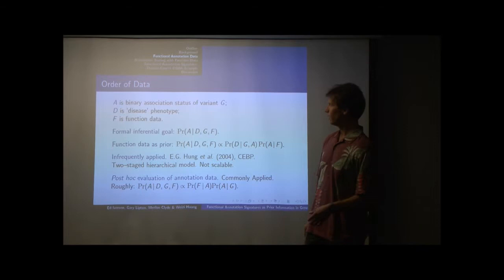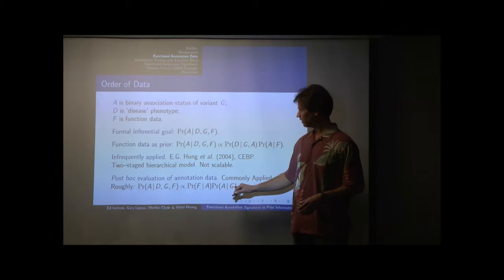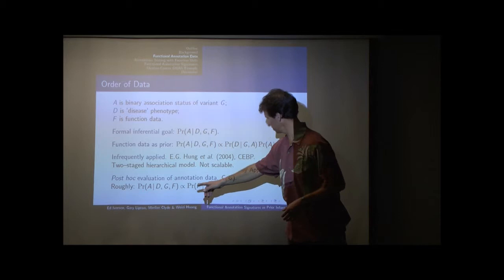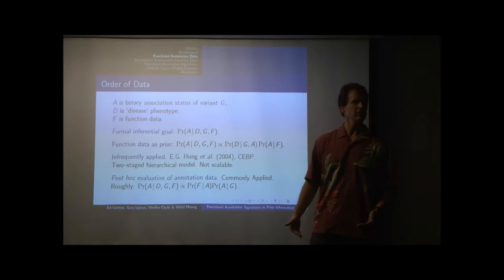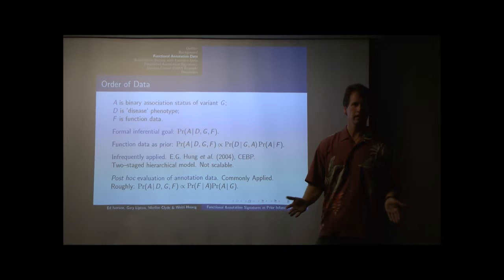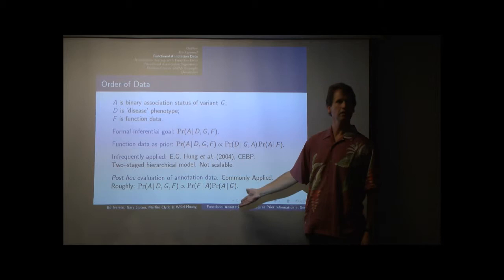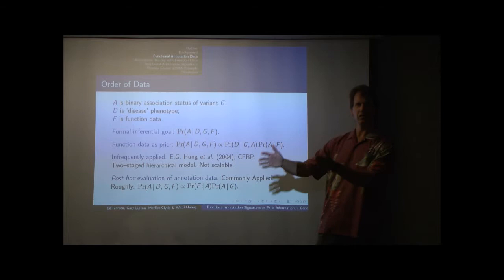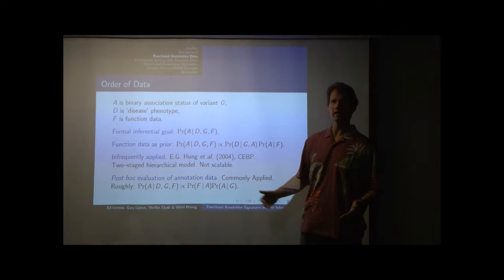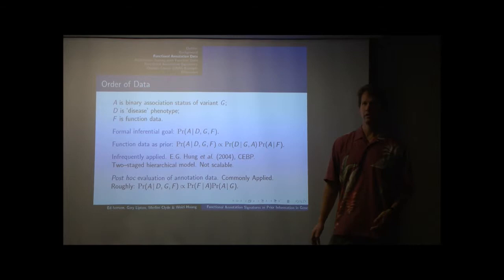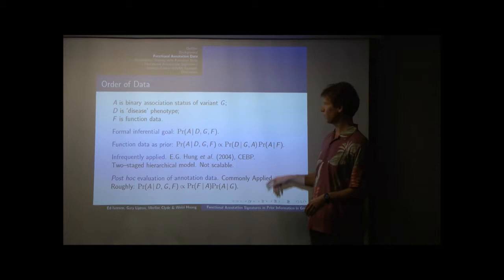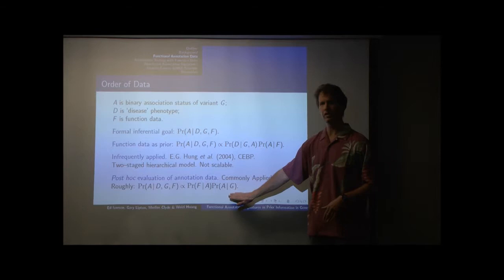The more common way to incorporate functional data is post-hoc. People take their genetic data, do an association scan, come up with a measure of association based purely on genetic and phenotype data — the posterior probability of association given G and D — and look at the top hits or interesting loci. Given that, they assess the weight of evidence of the functional data in light of what they're seeing. It's done in an ad hoc fashion. I'd like to argue for involving the functional data at the discovery stage, as opposed to what's more commonly done at a characterization or localization stage.